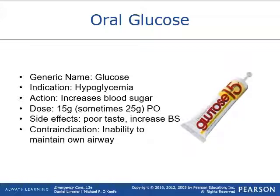Oral glucose is designed to treat the diabetic experiencing low blood sugar, or hypoglycemia. It works by directly increasing glucose in the body. It comes in a gelled packet of either 15 or 25 grams and is given orally — just let the patient drink it from the tube. Side effects are increased blood sugar and poor taste. Contraindications are absence of hypoglycemia and inability to maintain the airway — if a patient's blood sugar is so low they're unresponsive, we can't squirt this in their mouth if they can't swallow it.